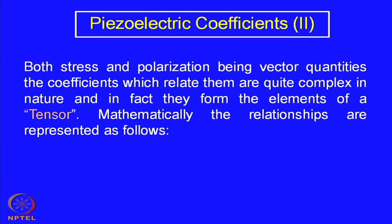Both stress and polarization being vector quantities, the coefficients that relate them are quite complex in nature and form elements of a tensor. The coefficients that mathematically correlate mechanical stress or strain to dielectric polarization or voltage are not singular numbers; they are a large set of values depending on the different directions in which stress is generated or voltage is generated. They form a tensor, and we will see how many elements are in the tensor.